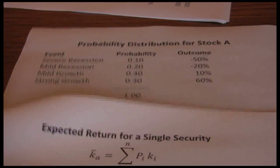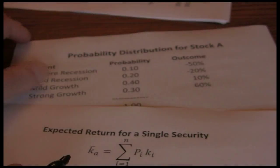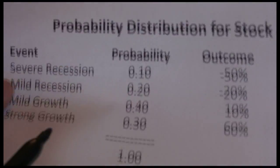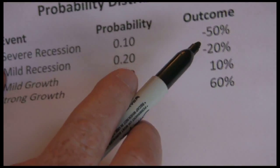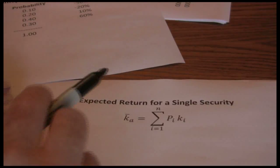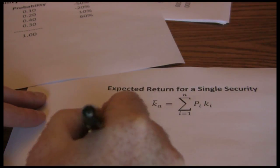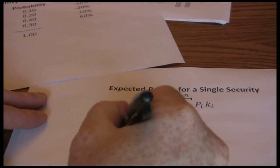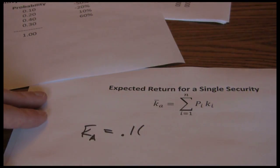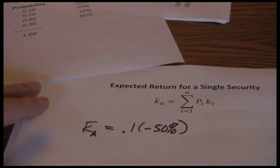In the expected return formula, you can see we take the probability times outcome for each possible outcome, our scenario. So we start with the probability times outcome. So our expected return for stock A is just the .1 probability times negative fifty percent for our first outcome.